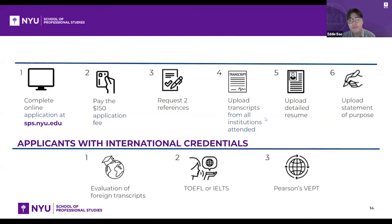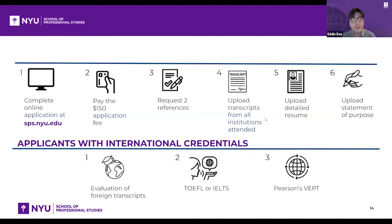For applicants with international credentials — meaning more than half of your academic program was completed at an international university outside the US, including Canada and the UK — you must submit a course-by-course evaluation. This determines how your academics compare to the US system and whether your degree is equivalent to a US bachelor's. We accept evaluations from six NACES companies listed on our website. Start this process early as it's time-consuming.